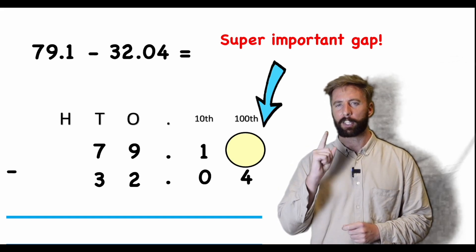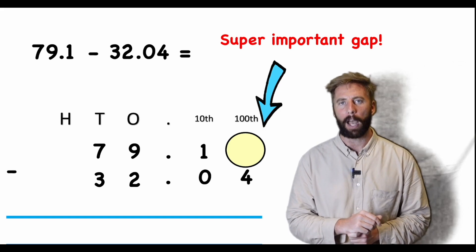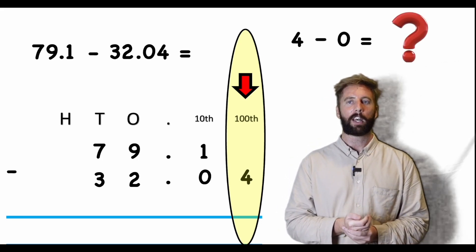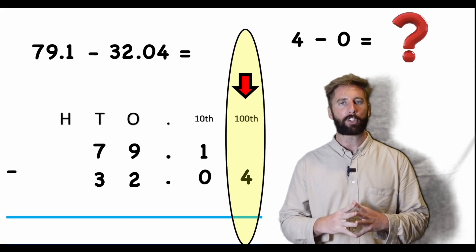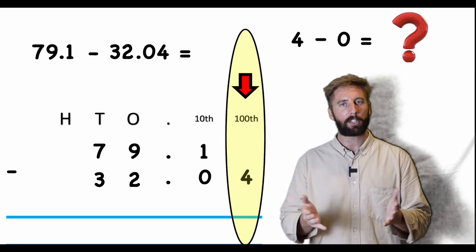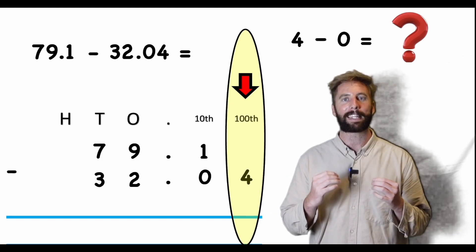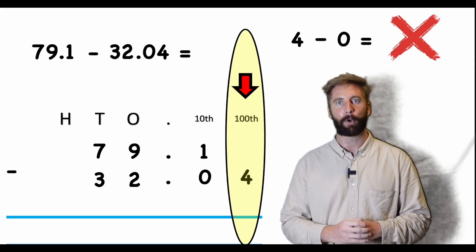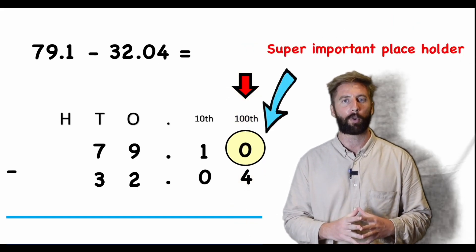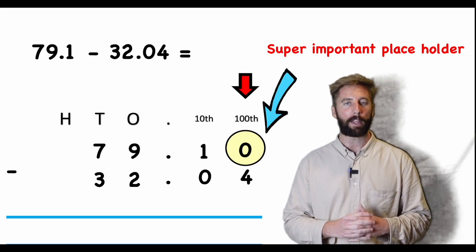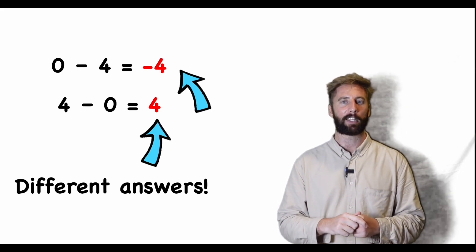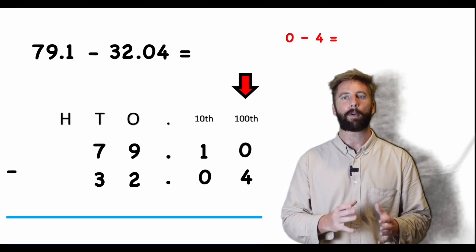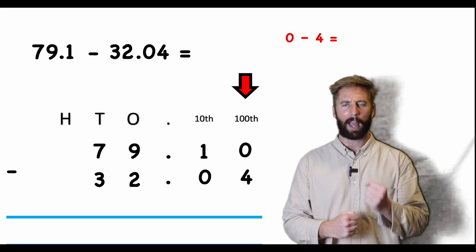Am I ready to begin? Not quite — there's a gap, and this time it's super important. If I try to answer the hundredths column and there's no placeholder above, I might think the question says four subtract nothing. That would be wrong, because I still have to take that hundredth away from something. If there's nothing there, I need to put a placeholder in, or I'm going to end up with a totally different number. This is the most common mistake students make.